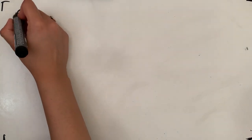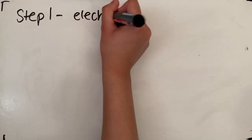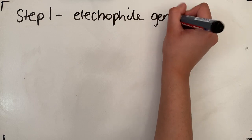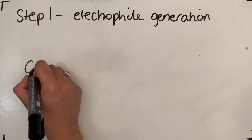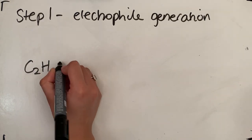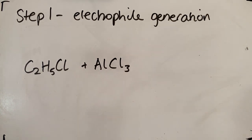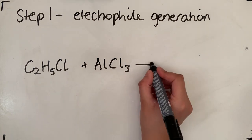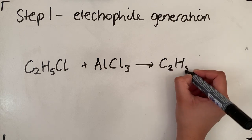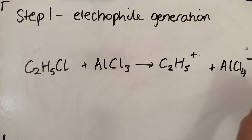Step one is always the generation of our electrophile. So electrophile generation. Our electrophile in this case was C2H5Cl. So we need to generate the electrophile from this. Our halogen carrier is going to help with this process. And it's basically going to pull off that chloride over there. So we'll be left behind with C2H5+ and AlCl4-.